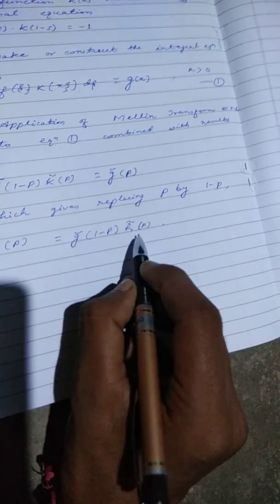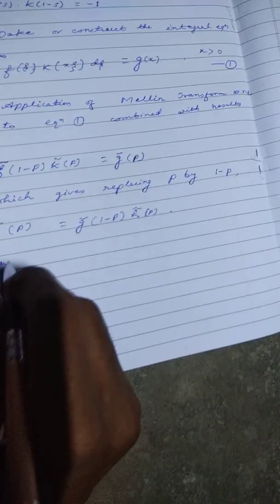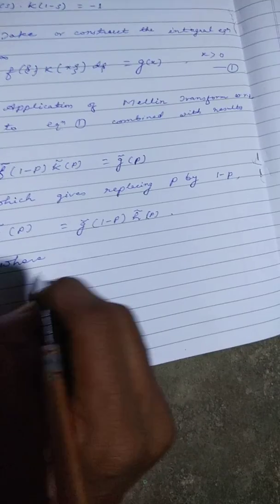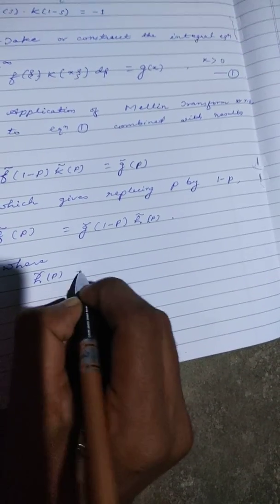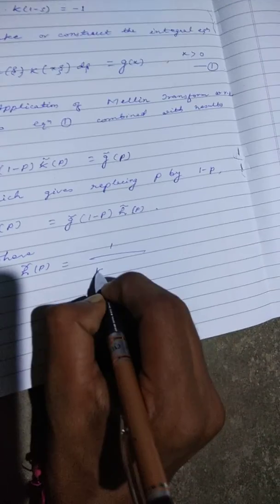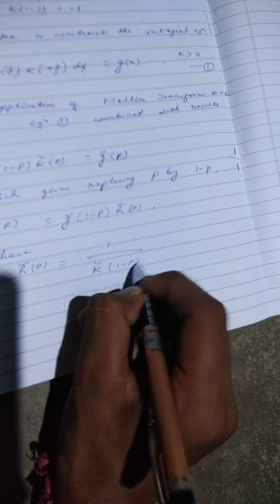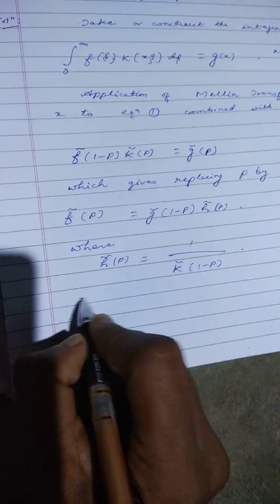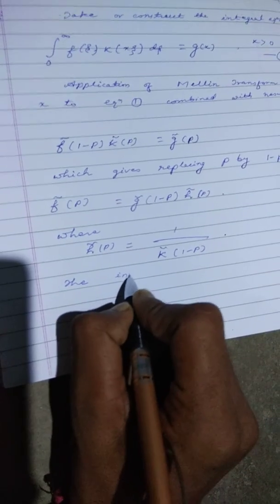Now what is S̃(p) here? S̃(p) is nothing but 1 upon K̃(1 − p).